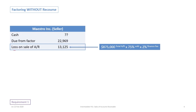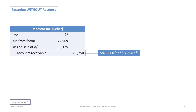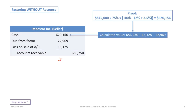We can also calculate a gain or loss on the sale of accounts receivable — very rarely will you come across a gain. We determine the loss based on the finance fee: $875,000 times 75% times the 2% finance fee gives us a loss on sale of accounts receivable of $13,125. Next, we calculate how much of the receivables we are actually selling off, which is simply the total receivable times 75%, giving us $656,250. For our journal entry to balance, we subtract the other items from $656,250 to calculate cash of $620,156.